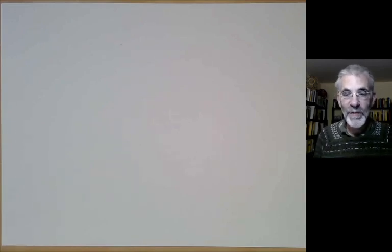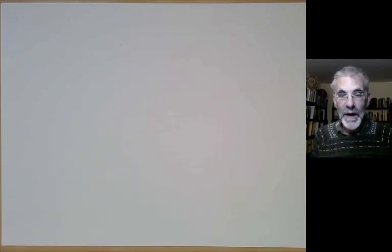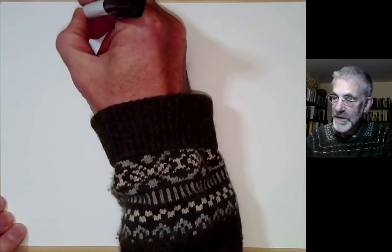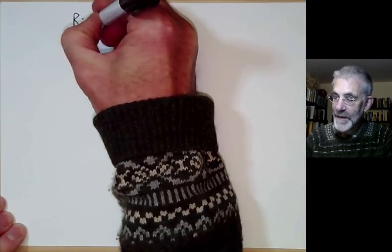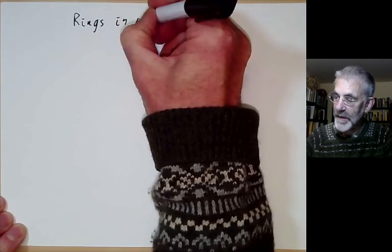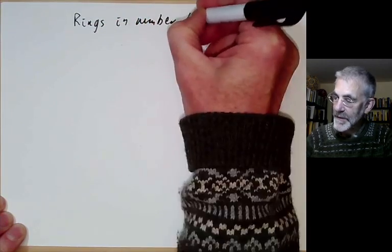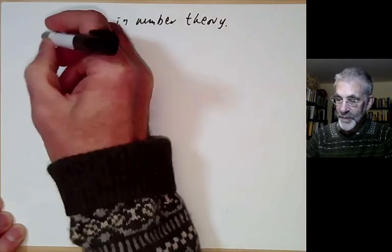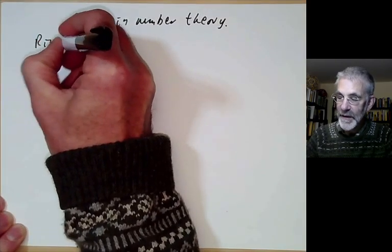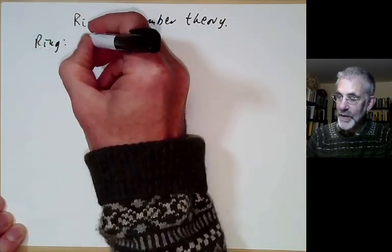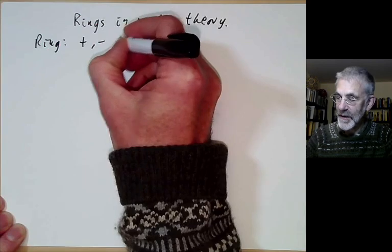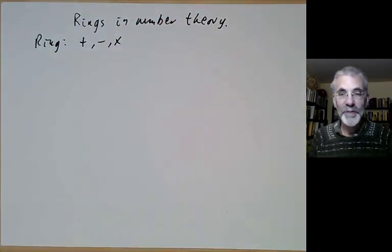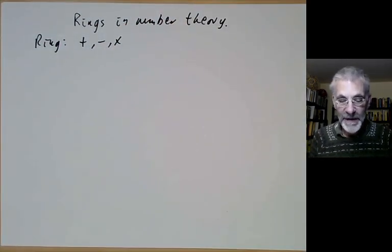This lecture is part of Berkeley Math 115, an introductory undergraduate course on number theory, and will be mostly about rings in number theory. I'll start by very quickly recalling the definition of a ring. A ring is something where you can do addition, subtraction, and multiplication, satisfying the usual rules of algebra.